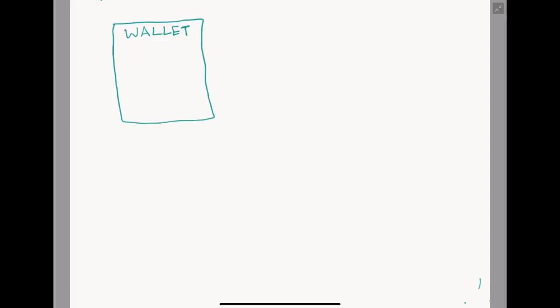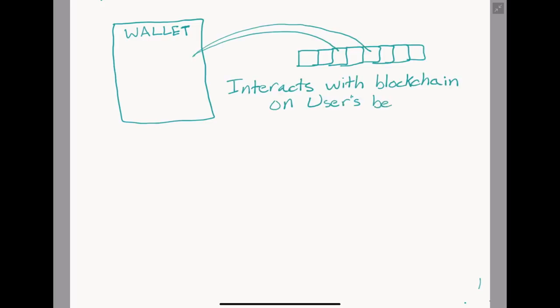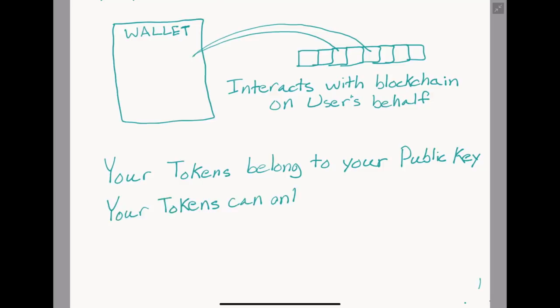This is all a wallet does: it asks the blockchain these questions for you so you do not need to manually do so. Your wallet does not hold your coins. Your coins only belong to your public key address and can only be sent away using your private key. Trust Wallet stores your private key, your 12 words, for you. But if you do not like using wallets and wanted to move your coins around manually, you would need to know your private key.